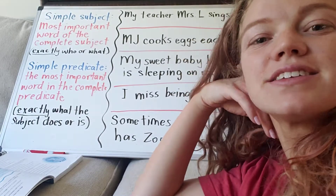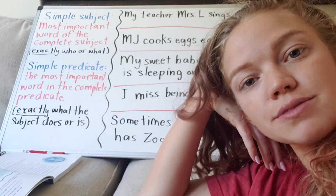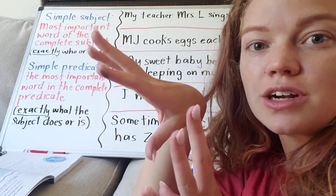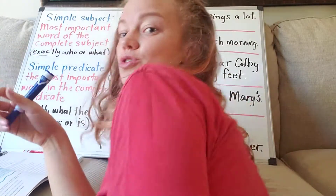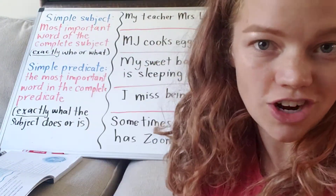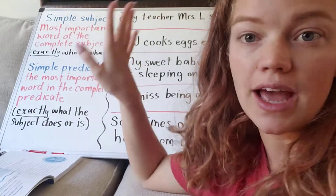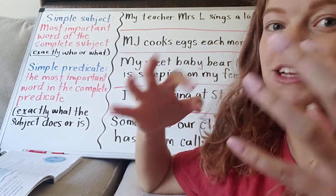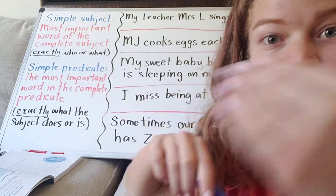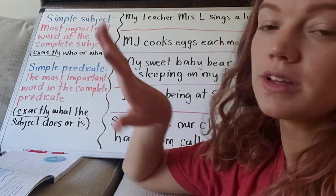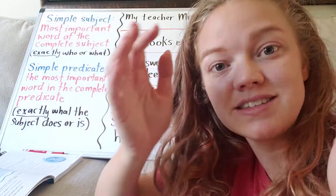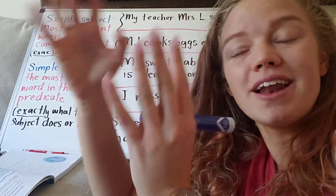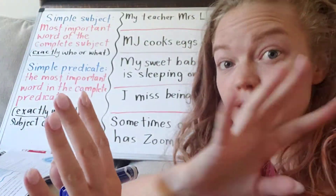Hi fifth grade! So last week we talked about complete subjects and complete predicates, something we touched on a little bit last year, but I really wanted to get us back into it so we can further break down sentences and structure. This week we're going to be looking at simple subjects and simple predicates. The complete subject is the complete section of the sentence that focuses on who or what the sentence is about, and the complete predicate focuses on what the subject does or is.